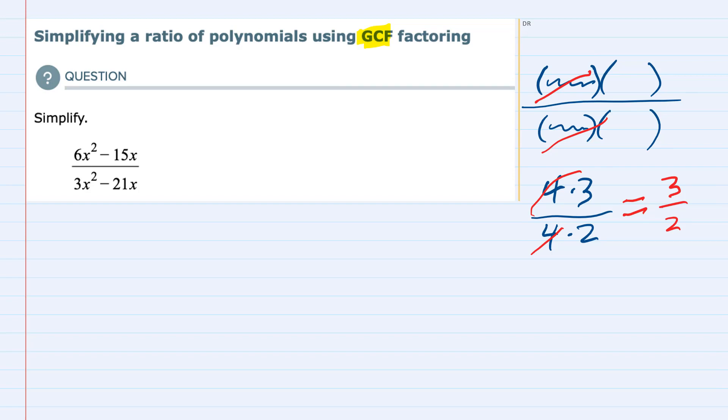So back to our problem, we have 6x squared minus 15x. First I'm going to look at the numbers 6 and 15. If I were to think of the multiples for 6 and 15, the multiples of 6 are 6 and 1, 2 and 3. The multiples of 15 are 15 and 1, or 3 and 5. The largest one that they have in common is that they both can be written as multiples of 3.